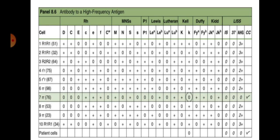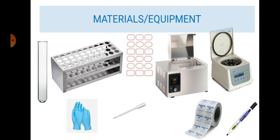That ends our discussion on antibody identification. We are now done with antibody screening and antibody identification. Let's proceed to the materials and equipment used for performing this experiment. We have Wassermann test tubes, test tube rack, gum label, water bath set up at 37 degrees Celsius, gloves, centrifuge, pasture pipette, marking pen, and Nescofilm.